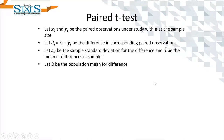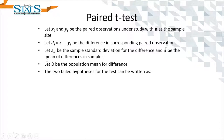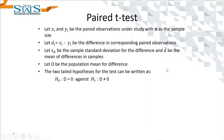Considering D as the population mean for the difference — meaning the population from which this sample is drawn has a population difference of D — our hypothesis is that D is equal to 0 versus D is not equal to 0. That means there is no difference between x and y versus there may be a difference.